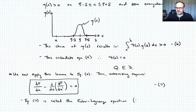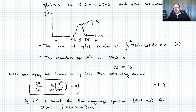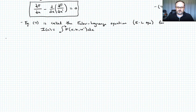Equation seven is called the Euler-Lagrange equation — I'll usually refer to it as the EL equation — for the functional I of u equal to the integral from a to b of f of x, u, u prime dx.